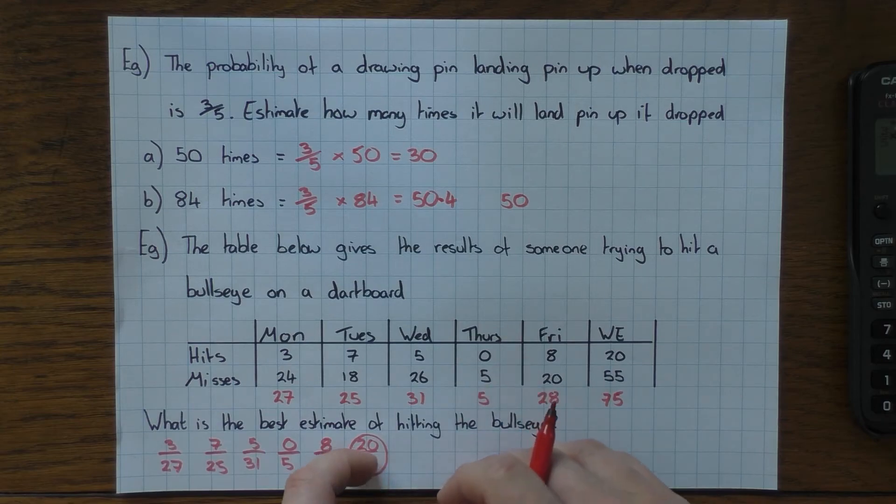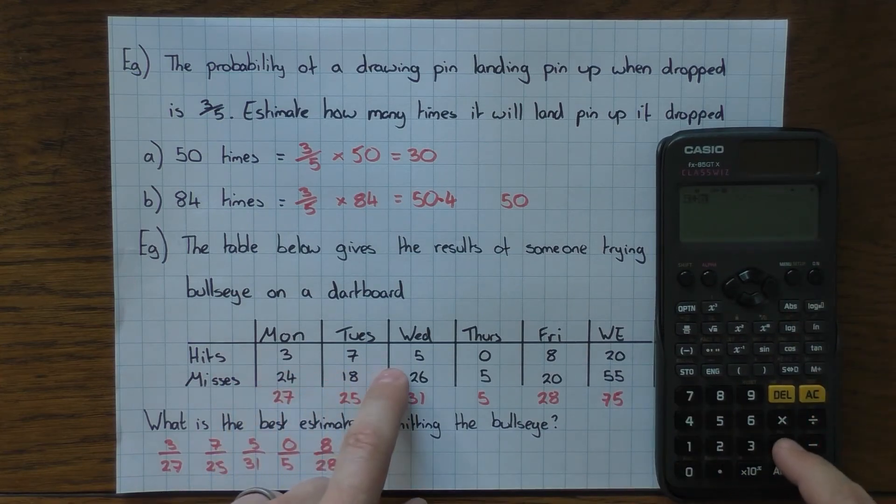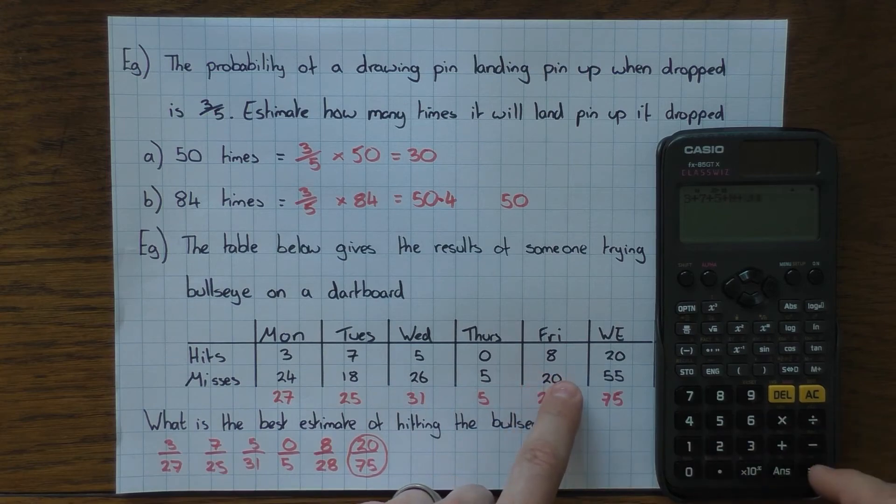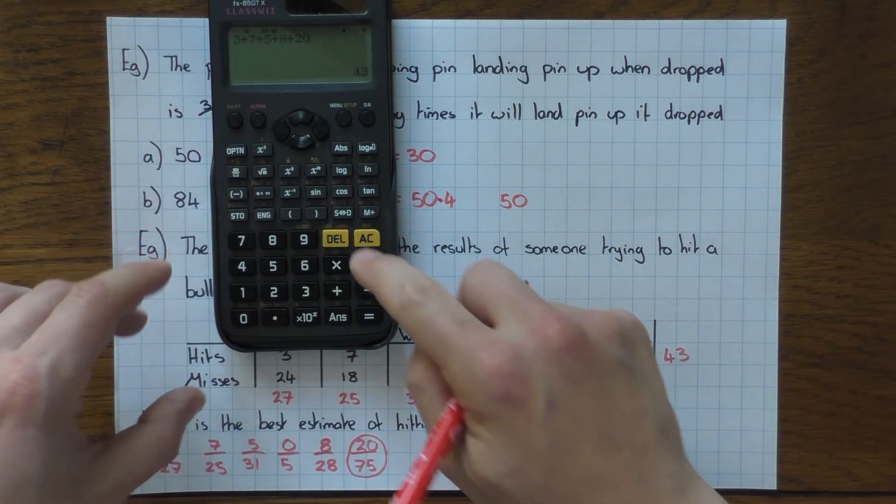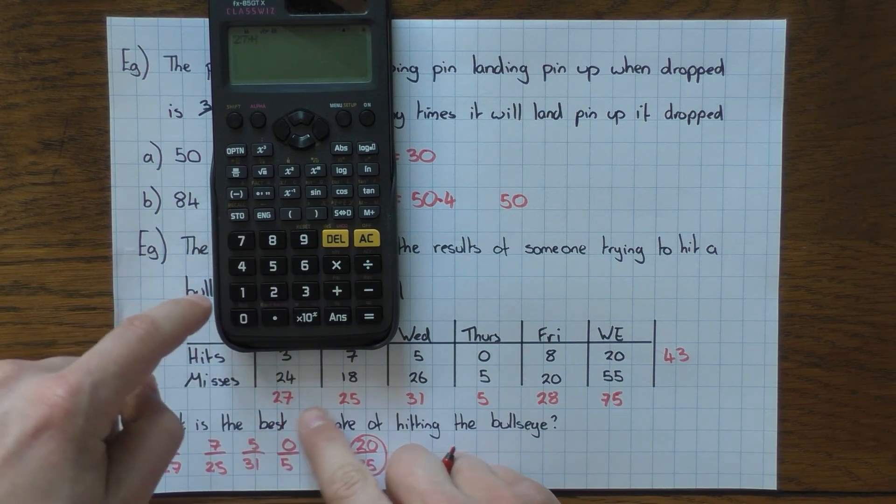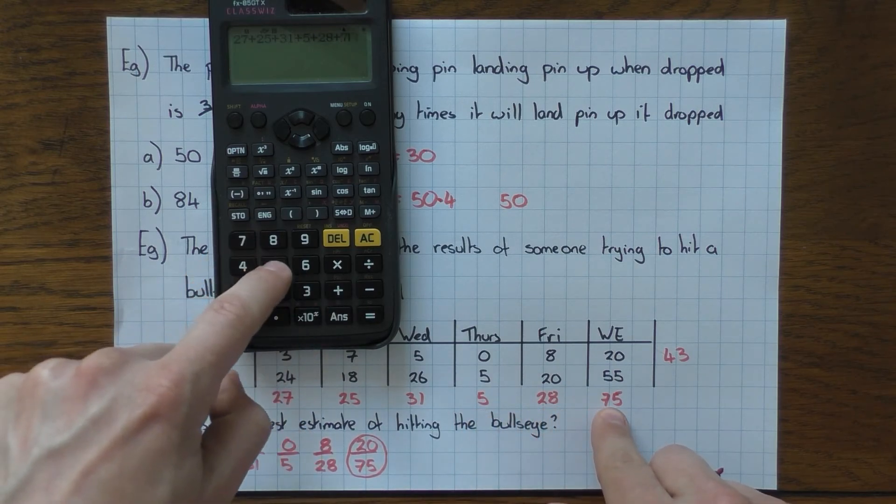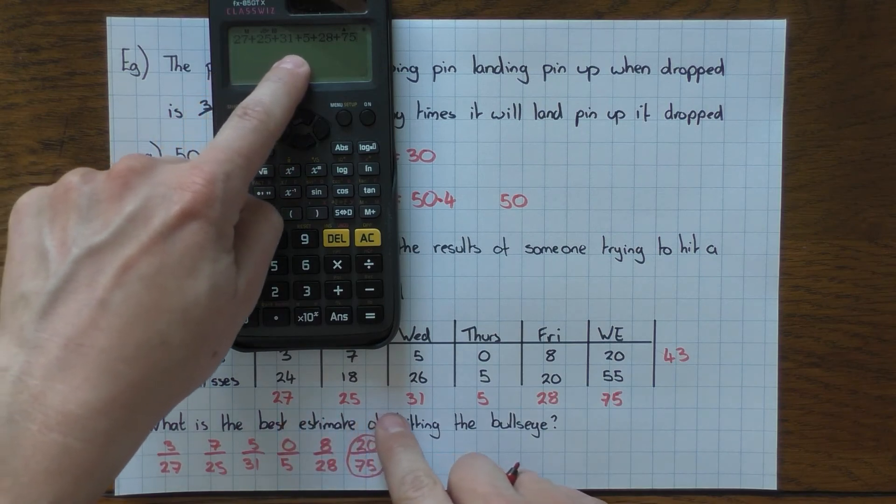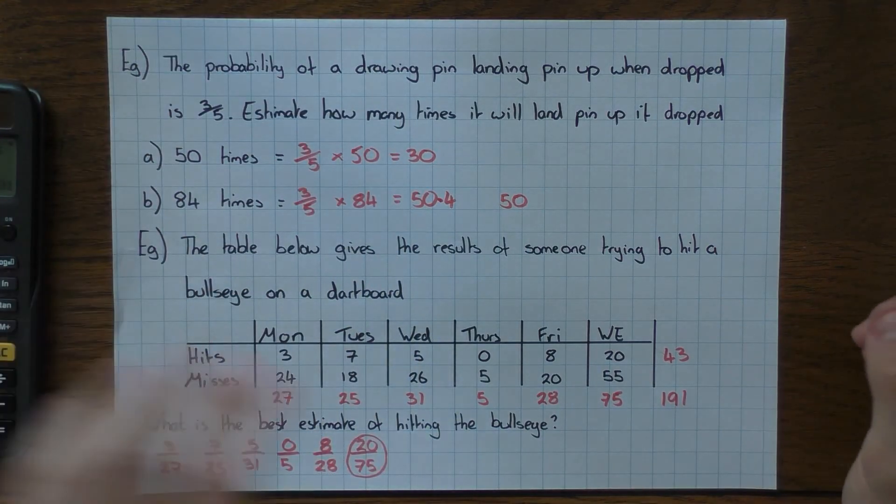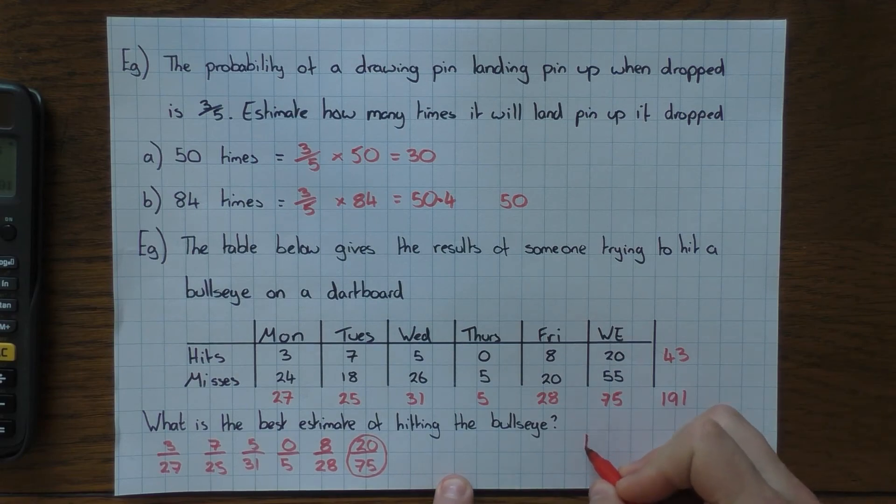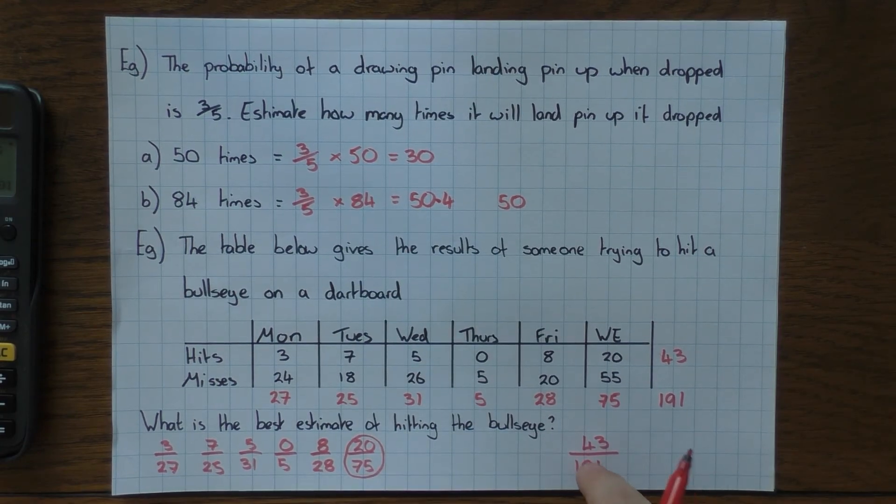However, what you could also do is add all of them up. So here we have 43 hits. And in total it was tried 27 plus 25 plus 31 plus 5 plus 28 plus 75, which equals 191 times. So the best estimate of hitting the bullseye using this table would be 43 out of 191. For exactly the same reason we picked that one—it's been done more times.